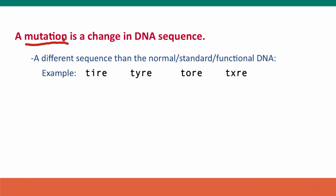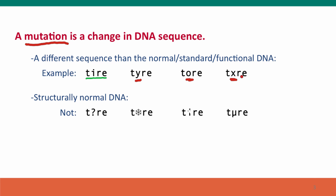If we consider it as text — because this is very much an informational concept — if the word 'tire' was the normal sequence, then replacing the 'i' with a 'y' makes a word with the same meaning; replacing it with an 'o' makes a word with a different meaning; replacing it with an 'x' isn't really a word at all, but it's still a string of text. This brings us to the second point: the change must produce something that's still structurally normal DNA. Question marks, snowflakes, broken characters, and symbols from another language don't belong — so none of these are mutations.